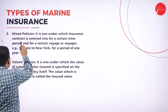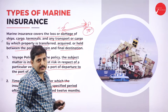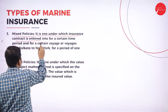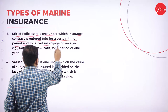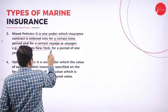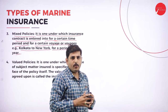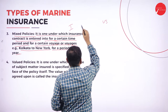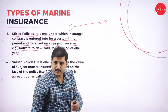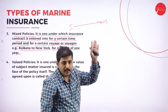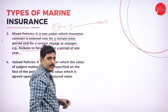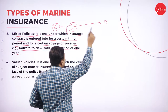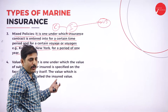Mixed policy is a mixture of time policy and voyage policy. The insurance contract is entered into for a certain time period and for a certain voyage — for example, Kolkata to New York for a period of one year. It is a combination of voyage policy and time policy. For example, sending goods from Indian port to US port — any transaction from India to US within 12 months is covered. But if goods are sent from India to China, it is not acceptable under mixed policy. Only transactions from India to US can be accepted under this policy.